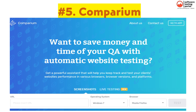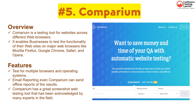Comparium is the fifth tool. It is a testing tool for websites across different web browsers, built for businesses. It enables testing on major web browsers like Mozilla Firefox, Google Chrome, Safari, and Opera. Features include: testing on multiple browsers and operating systems, running an infinite number of website tests, email reporting with offline reports sent quickly, and a great screenshot web testing tool acknowledged by many experts.